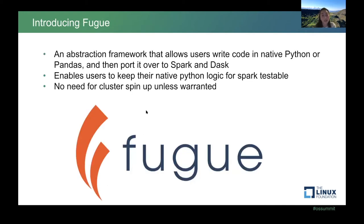One way to test quickly with native Python or Pandas, and only execute Spark when needed, is through Fugue. Fugue is an abstraction layer that keeps your code and computation native to Python, yet easily portable to Spark clusters. Developers that use Fugue benefit from more rapid iterations in their data projects. I will now go over a demo using a Kaggle dataset for feature engineering within the problem of toxic comment classification.